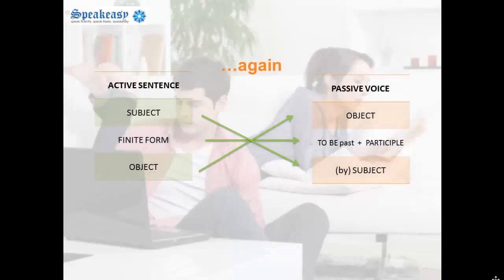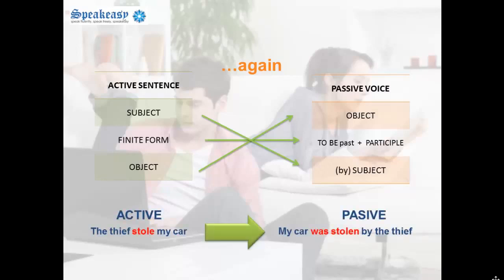Let's take a closer look at that structure. In an active sentence you have the subject, the finite form of the verb, and the object. In the passive voice, the object comes first, followed by the verb "to be" plus the past participle, and optionally the subject. The object moves from the end to the beginning, the verb stays in the middle but changes form, and the subject moves to the end or is left out entirely. So "The thief stole my car" becomes "My car was stolen by the thief."